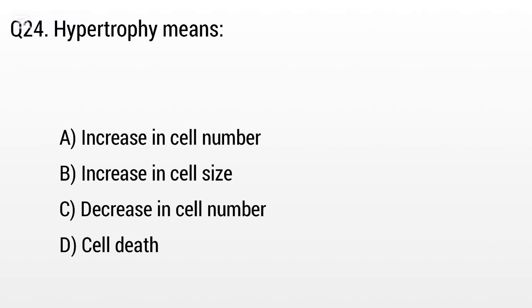Question 24. Hypertrophy means: Option A: Increase in cell number, B: Increase in cell size, C: Decrease in cell number, D: Cell death. But the right answer is Option B: Increase in cell size.